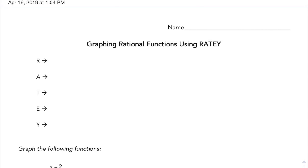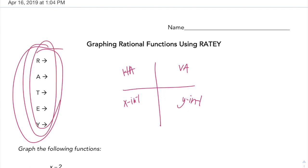So, R-A-T-E-Y, or RATEY as it's affectionately called, is just another way of graphing rational functions. Y'all have seen before I usually will do this, and I do like horizontal asymptotes, vertical asymptotes, x-intercept, and y-intercept. RATEY is just another way of what are your key features of the graph, and like writing those out just in this form of RATEY.